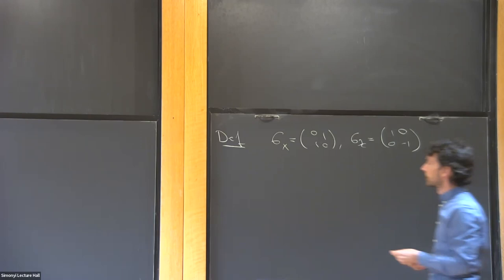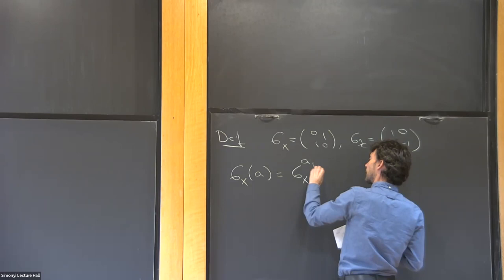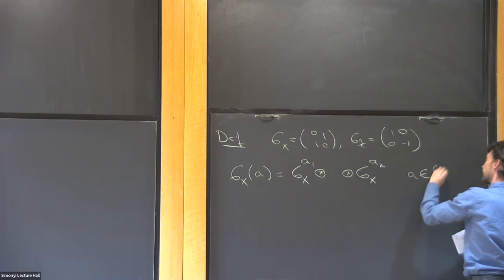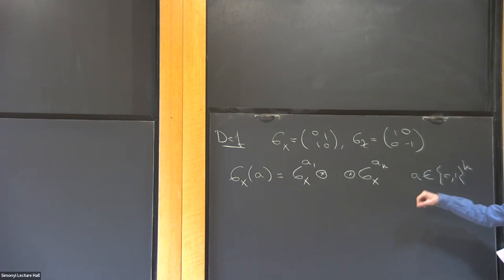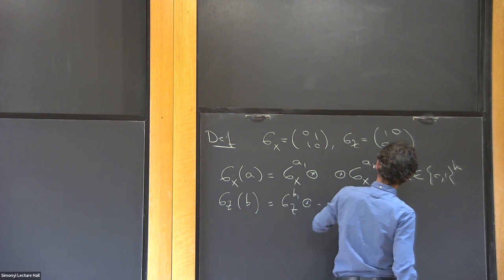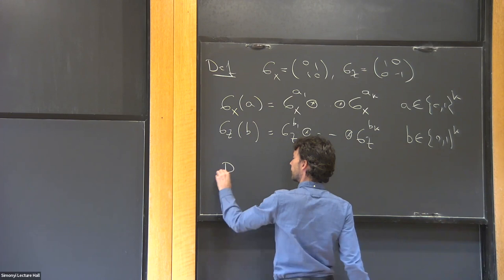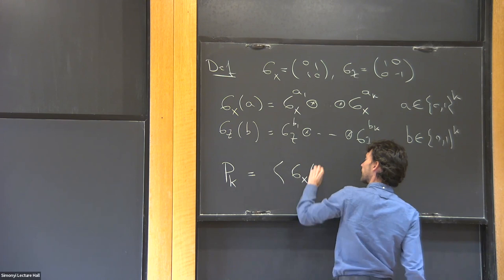I can generate bigger matrices by taking tensor products. I write sigma-x of a to be sigma-x^(a_1) tensor ... tensor sigma-x^(a_k), where a is a k-bit string. This is a 2^k by 2^k matrix, and there are 2^k of them. Similarly define sigma-z of b. The Pauli group P_k is the group generated by these matrices sigma-x(a) and sigma-z(b).